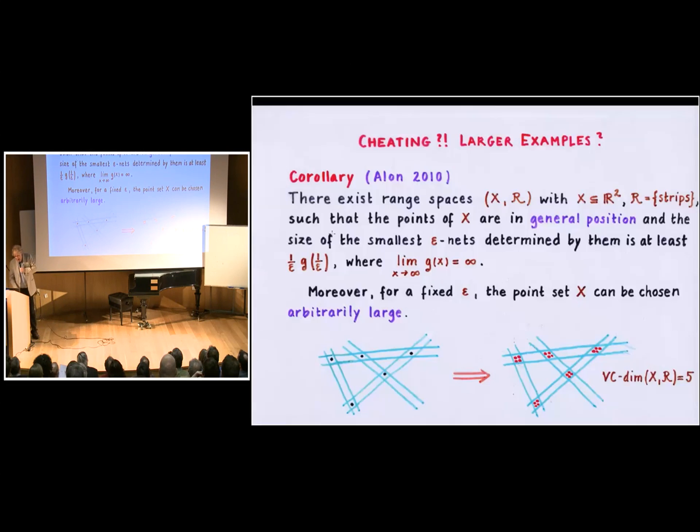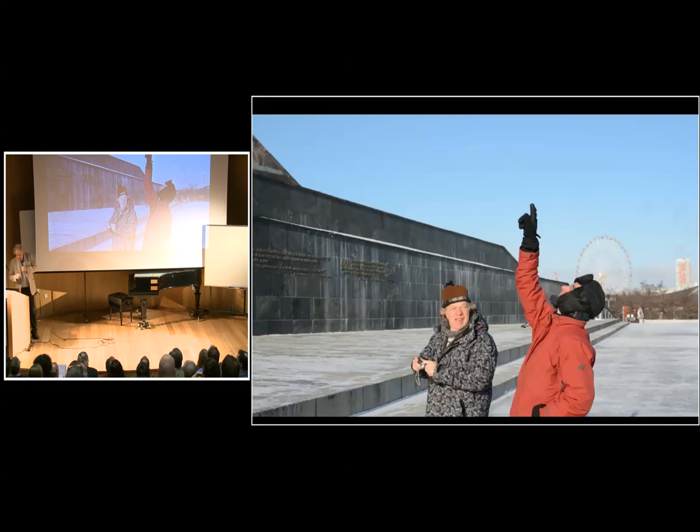Instead of looking at ranges that are straight lines, you can look at ranges that are just parallel strips, very narrow parallel strips. And then, of course, you are already allowed to move the points slightly. And if you are allowed to move the points slightly, then you are also allowed to multiply the points. This means that you replace each point by any number of points. And in this new construction, as a matter of fact, you can have any number of points, but the same is true. To have an epsilon net, you need at least as many points as you needed in this construction. So this is really an amazing, it was an amazing breakthrough. This is, you see, also in Moscow. I think that Noga is leading the way.